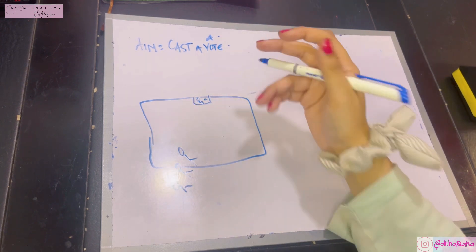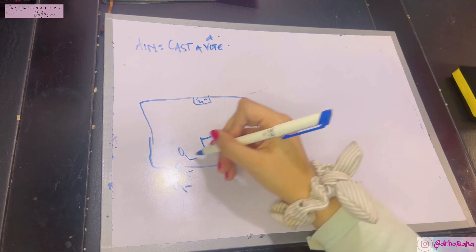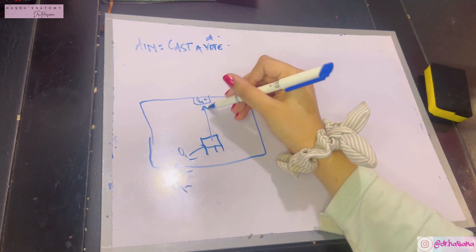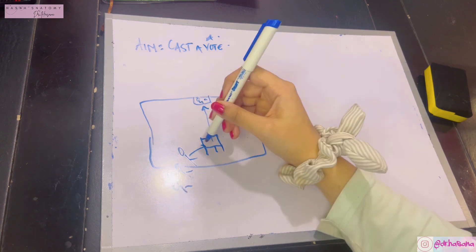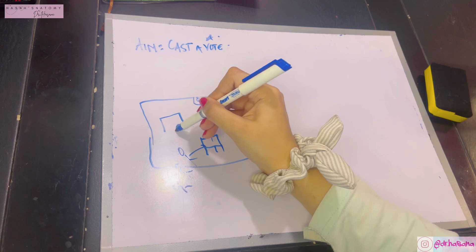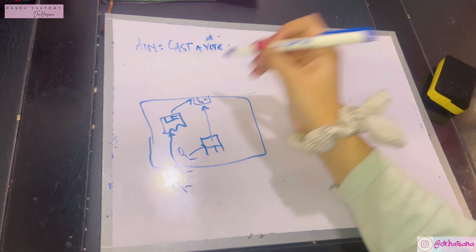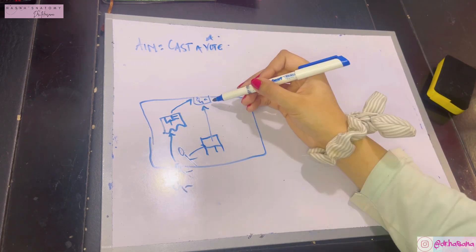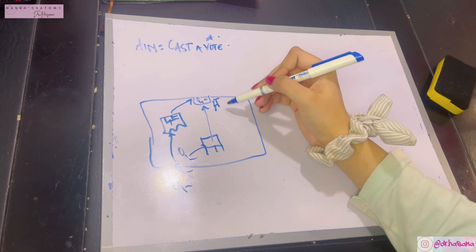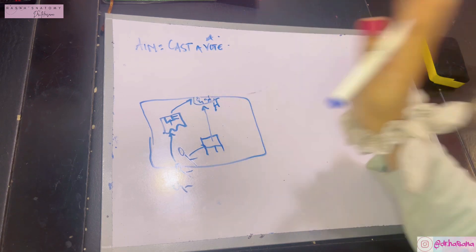However, to be able to cast a vote, the requirement is to get stamped — you cannot give the vote unless you're stamped. There are a couple of places you can get stamped: either at the main desk right at the entry, or in a waiting area where another desk will stamp your hand, or right outside the voting room there is a small desk where you can get stamped and directly cast a vote. So there are three different routes to cast a vote.